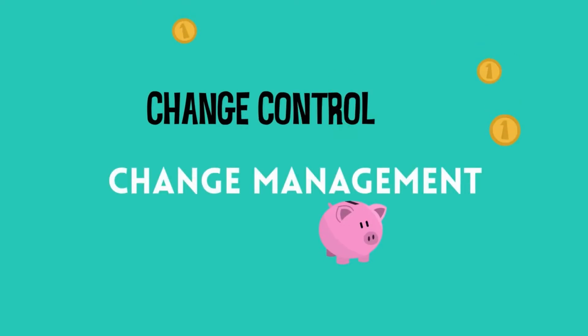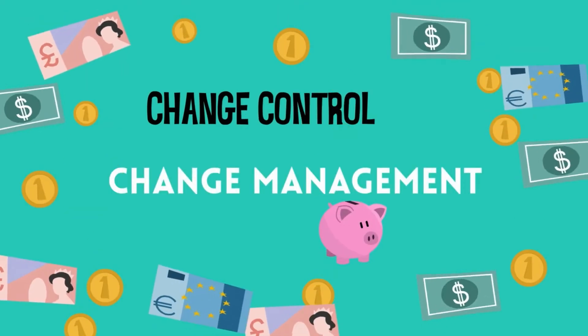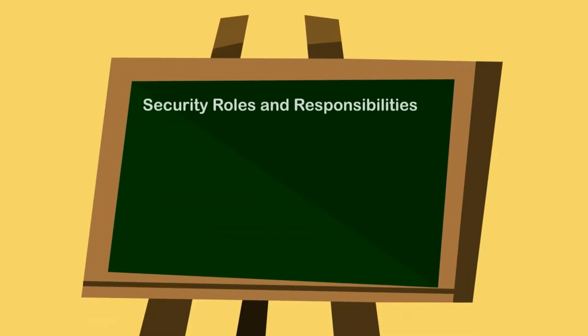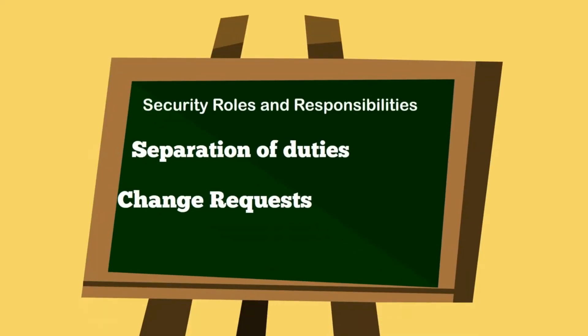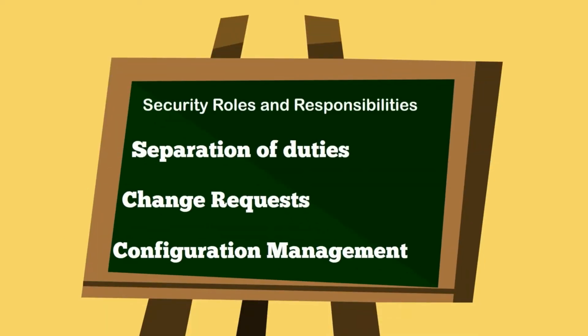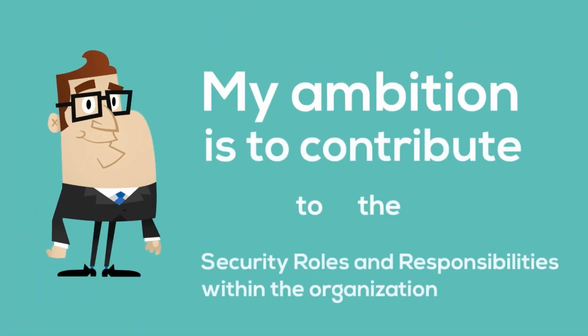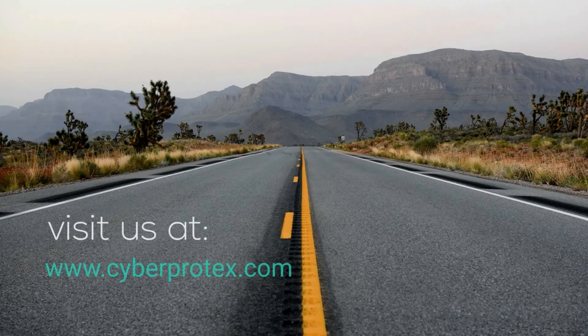Some of the different types of security roles and responsibilities within an organization come down to change control and change management. Specifically, separation of duties, change request systems, configuration management, and then policies, procedures, and processes — they all contribute to helping define what the security roles and responsibilities are within the organization.